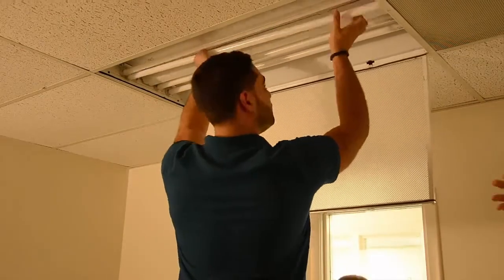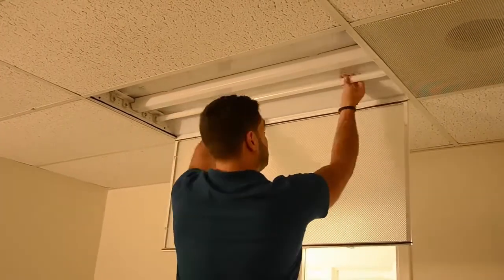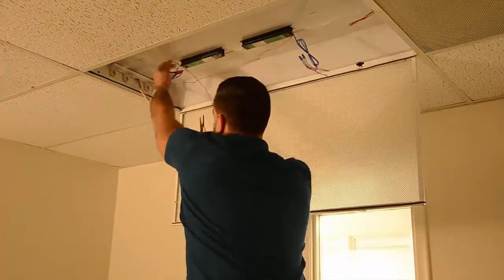Before installation, disconnect all incoming power to the fixture, remove all electric parts and ballast compartment cover, leaving only the supply and grounding leads.